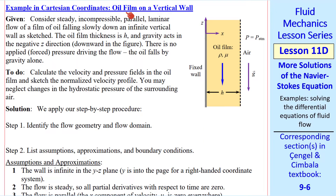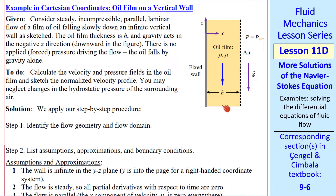Our first example is an oil film falling on a vertical wall. Our coordinate system is x to the right, y into the page, and z up. Gravity is acting down. The surface of the oil is vertical, exposed to atmospheric pressure air. The wall is fixed, and the oil properties are rho and mu. The thickness of the film is h. The oil is falling by gravity alone — there's no pressure gradient forcing the flow. We want to calculate the velocity and pressure fields in the oil, and we'll neglect changes in hydrostatic pressure in the air.